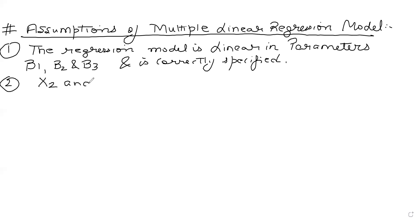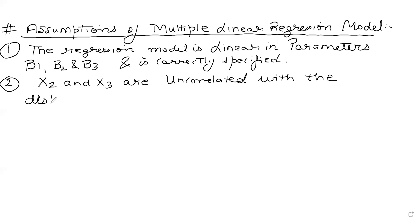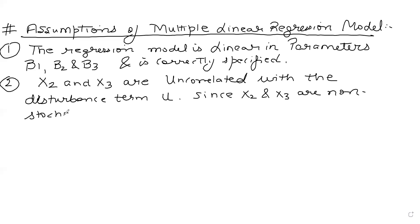Second assumption: X2 and X3 are uncorrelated with the disturbance term U. Since X2 and X3 are non-stochastic — they assume fixed values — they are completely uncorrelated with the stochastic disturbance term U. The population disturbance term U is a random variable with mean and variance.